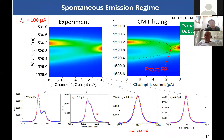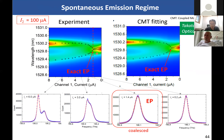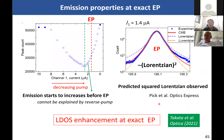This is the spectrum. We extracted the peak positions and observed the spectrum exactly at the EP condition — these two peaks are coalesced at exactly this position. If we can observe the exact EP, we should be able to observe light emission enhancement predicted by theorists at MIT, who predicted enhancement around the exact EP. And actually we observed this: the output intensity is increased even before the EP.